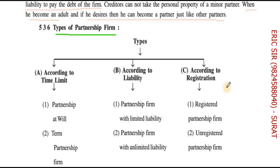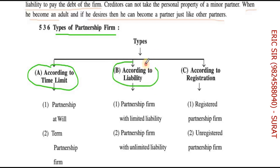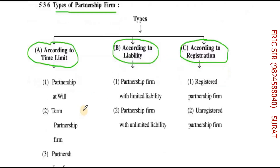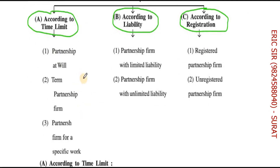Welcome back. Now let us cover a very important topic — the types of partnership firms. Broadly speaking, there are three types or three categories of partnership firms: according to time limits, according to liability, and according to registration.